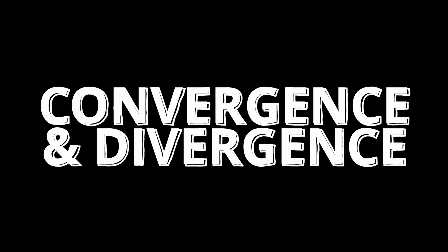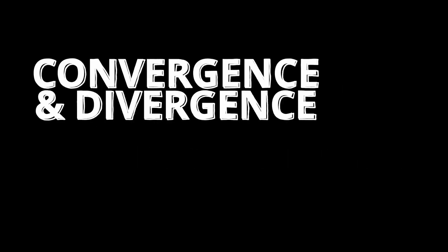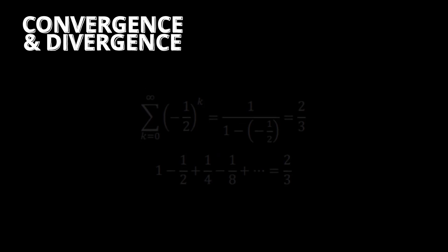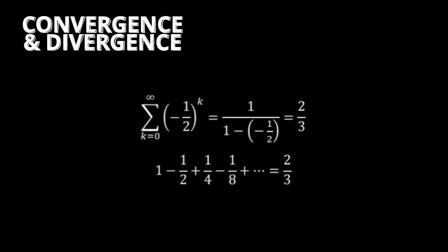Convergence and divergence of a series. Similar to the concept of continuity, a convergent series' partial sums approach a certain value. For example, this series, when expanded, approaches the value two-thirds. So, we call it convergent.